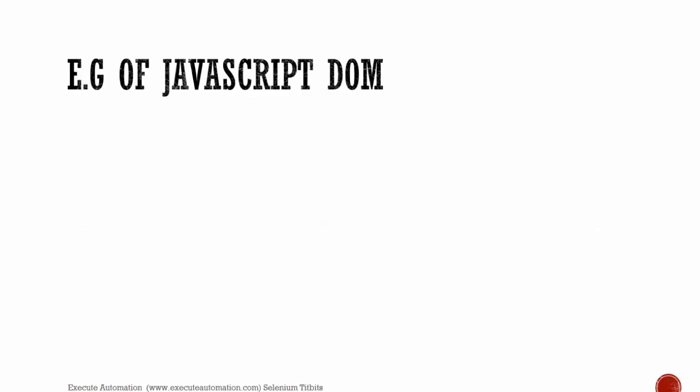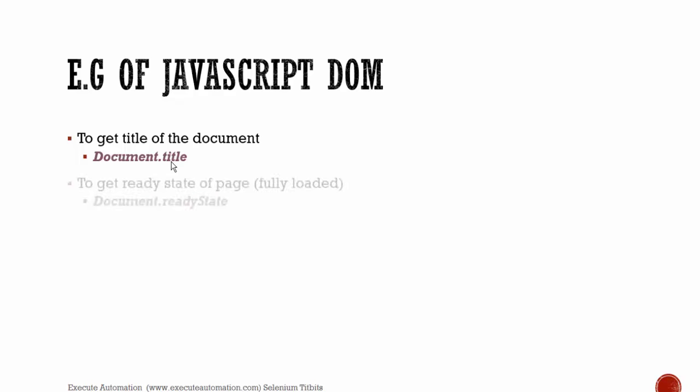Some examples of JavaScript DOM: to get the title of a document — which is the page of the website — you use document.title. Note the 'document' prefix, since it's the Document Object Model. To get the ready state of a page, use document.readyState. This returns either 'complete' if the page is fully loaded, or 'incomplete' if it is not.